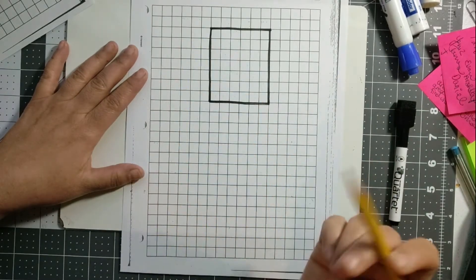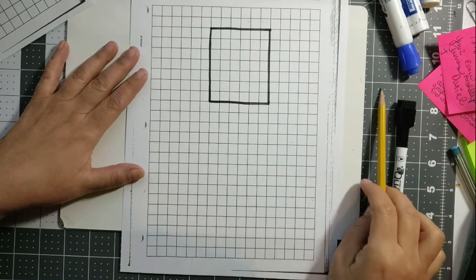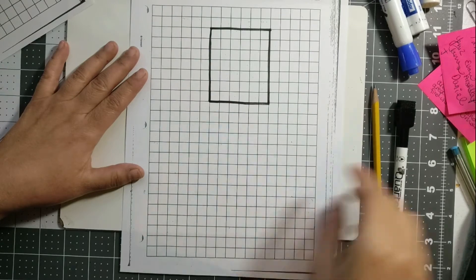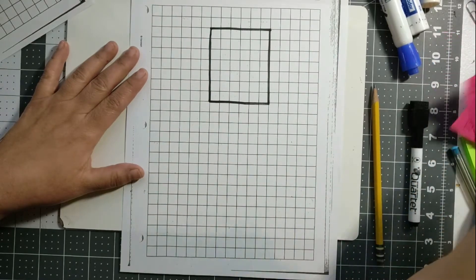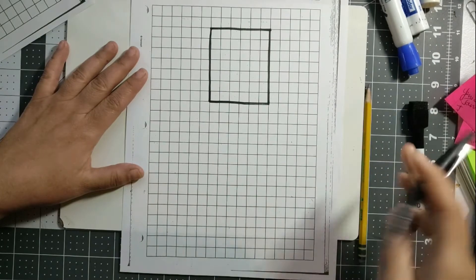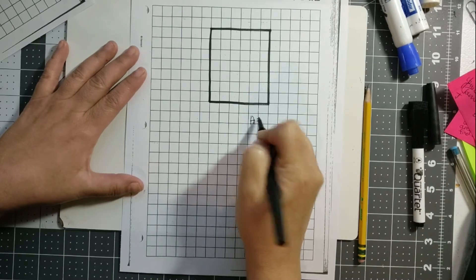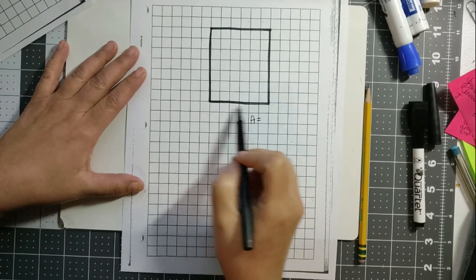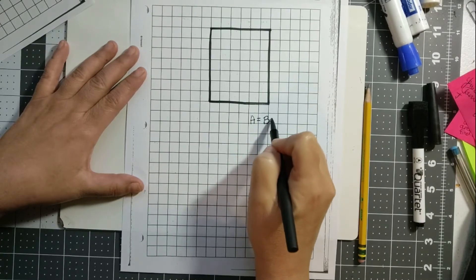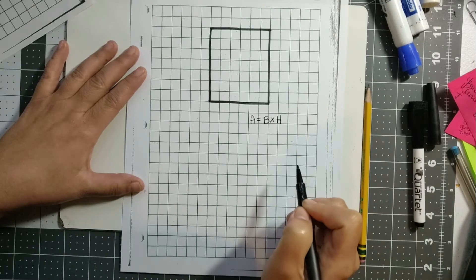But an easier way to do that would be to multiply. The formula for finding the area is base times height. So base times height.